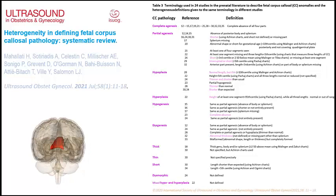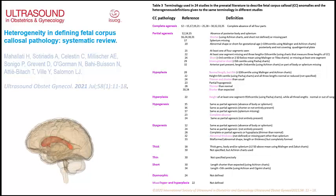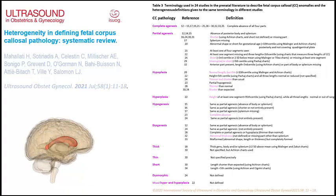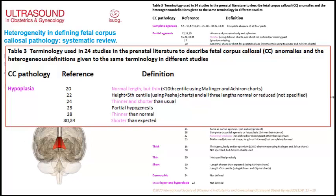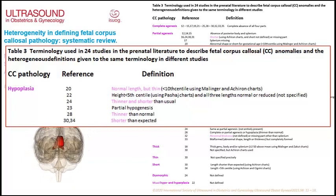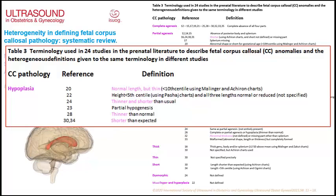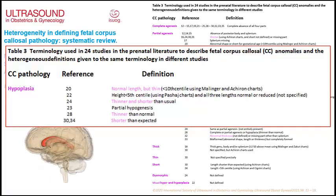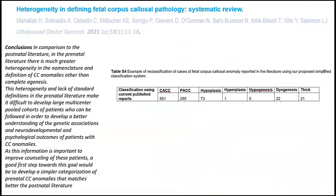There is a big heterogeneity and confusion among the literature when defining these anomalies, as nicely described in a paper from the group of Salomon. The term hypoplasia is defined very differently depending on the paper: for some authors a hypoplastic corpus callosum has normal length but is thin; for others it is thin and short; and for others it is thin or short. Therefore, there is an obvious need for consensus and standardization of corpus callosum anomaly classification and terminology.